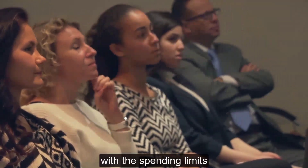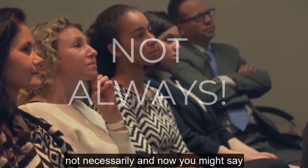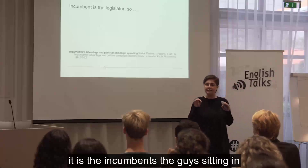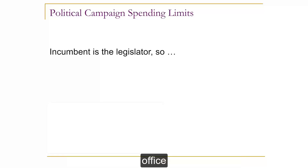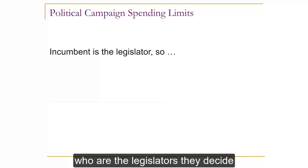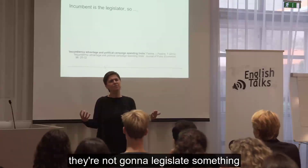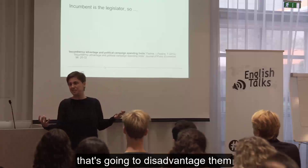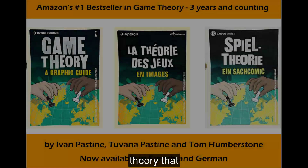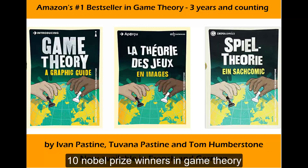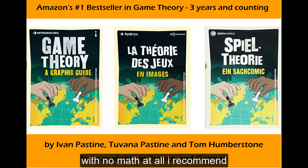So, fair competition with spending limits? Not necessarily. And now you might say, actually we could have guessed this, because after all it is the incumbents — the guys sitting in office — who are the legislators. They decide on the existence of a spending limit and how much the limit should be. They are not going to legislate something that's going to disadvantage them. So if you want to know more about game theory — that gives the intuition and covers about ten Nobel Prize winners in game theory with no math at all — I recommend it, because I wrote it after all. Thank you very much.